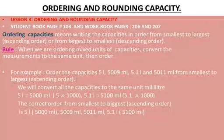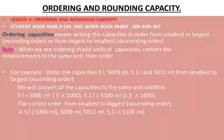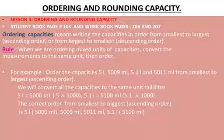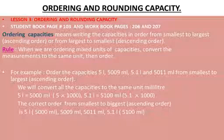If the question has capacities with some in milliliter and some in liter, you have to convert all to the same unit and then order them. Here is an example: order the capacities 5 liter, 5009 milliliter, 5.1 liter, and 5011 milliliter from smallest to largest. We will convert all capacities to milliliter — that is the easy conversion. Multiply by 1000 to find the answer very easily.